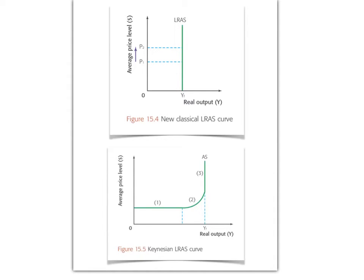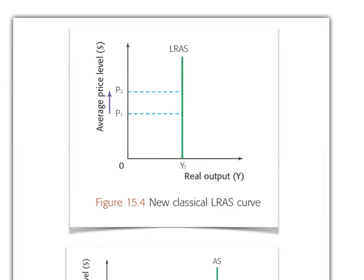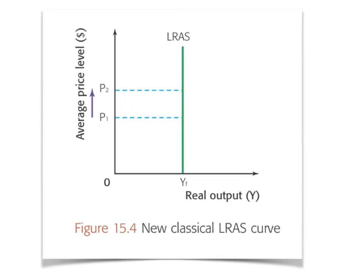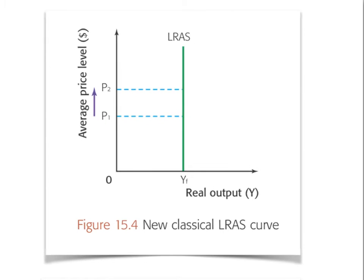Keep in mind that the long-run aggregate supply curve of the neoclassical model tends towards the opinion of supply-side economists, monetarists, and those who believe the government should have as little influence in the marketplace as possible. Here's the new classical long-run aggregate supply curve, and in this view the curve, as you can see, is perfectly inelastic or vertical at what's known as the full rate of employment.